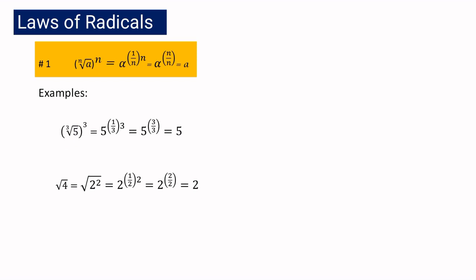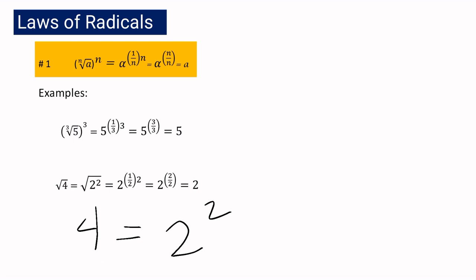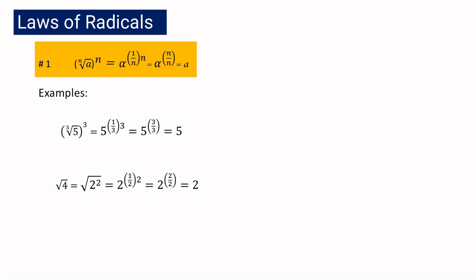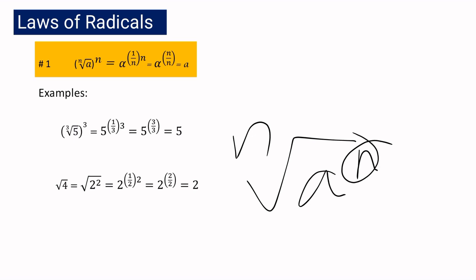For example 2, we have square root of 4. We can express 4 as 2 squared, knowing that our index here is 2, so we are going to express 4 with an exponent of 2. We have 2 squared, then 2 raised to 1 half multiplied by 2, which will become 1. That is why square root of 4 is equal to 2. The point here is, if our index is the same as our exponent, it will become 1, so the answer will be the radicand alone, which is a.